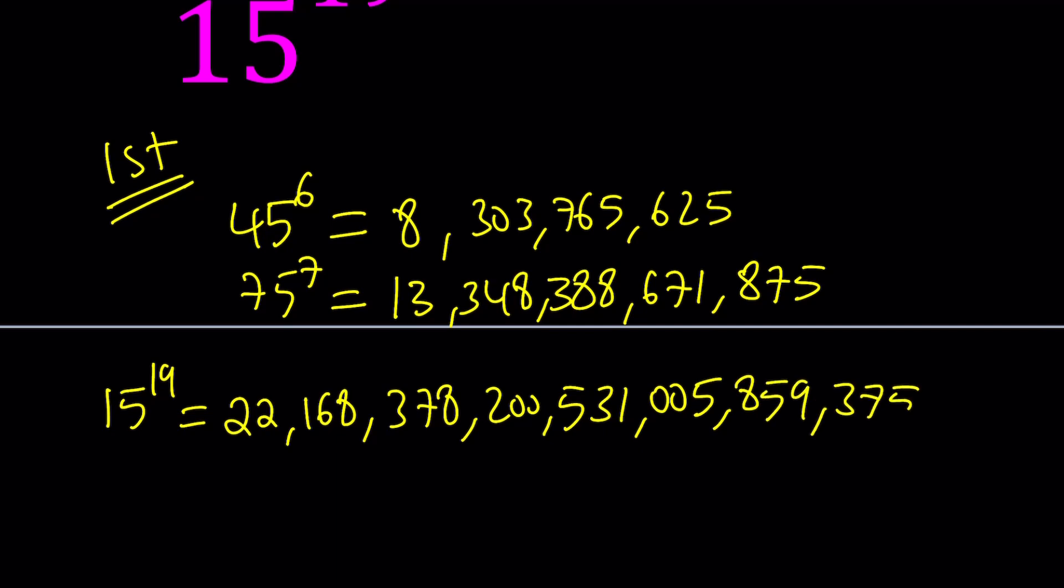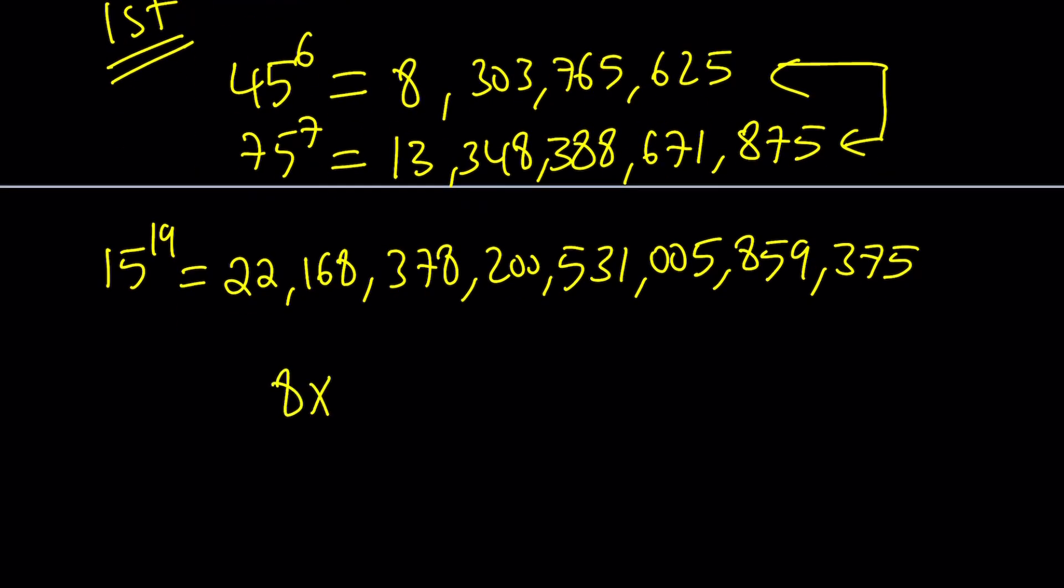And that's going to be our number. So you can go ahead and multiply these two numbers which is going to give you something like roughly 8 times 13, and then since the first number is 10 to the 9th level and the second one is 10 to the 13, their product is basically going to be about 10 to the power 22.